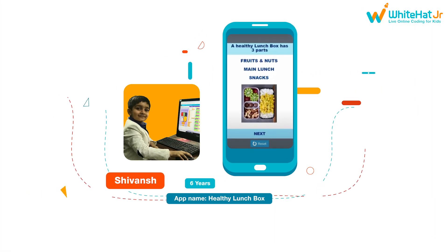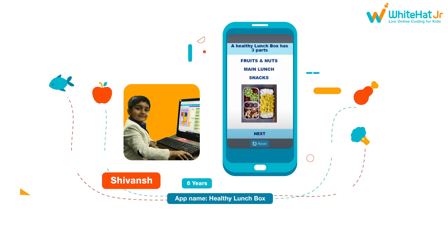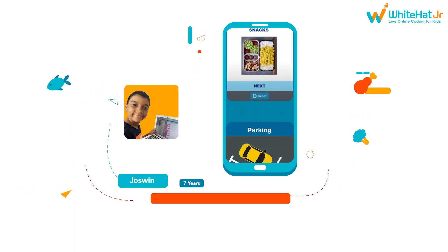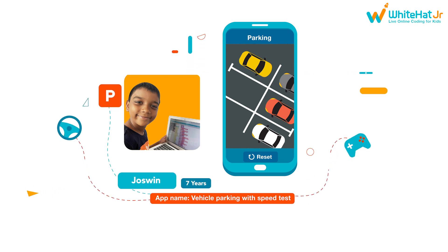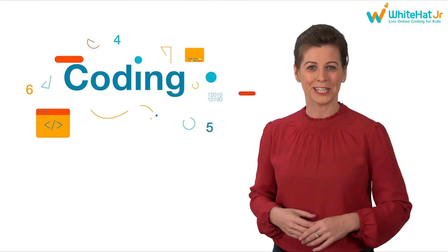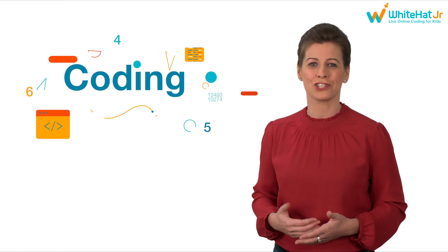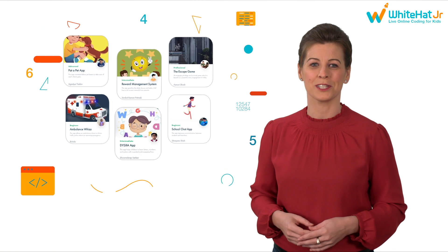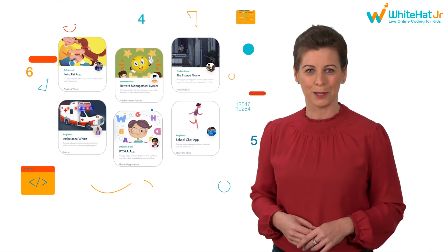Six-year-old Shavanch is helping mothers make tasty, nutritious meals that their kids will actually like, while Josuin is using gaming to build the right parking and driving habits. All of this through coding. At an age where most kids struggle to express themselves, our little coders are solving real-world problems.